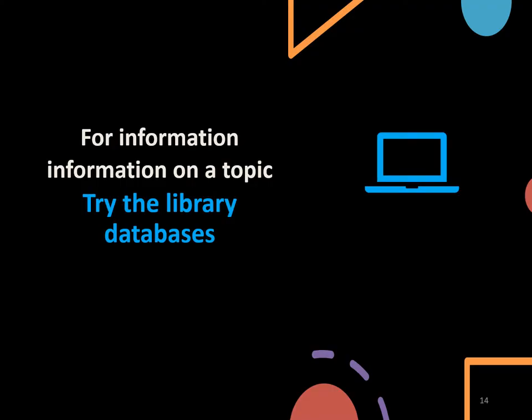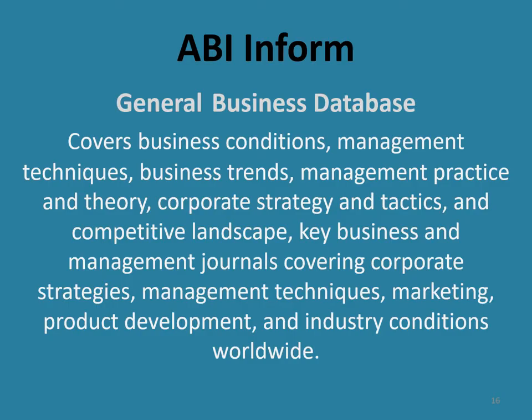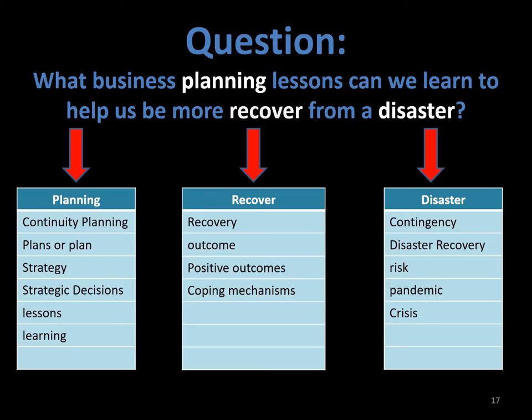If you need information on a topic, you should search the library databases. For more information on the different business databases we have, check out the Business Library Guide. We're going to look at the database ABI-Inform today. This is one of our larger business databases and covers a wide range of business topics, everything from management techniques to business trends, corporate strategy, competitive landscape and even industry conditions. Before you search the database, write your topic out as a question, identify the keywords and brainstorm for alternatives.